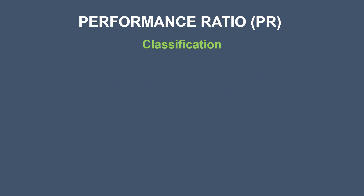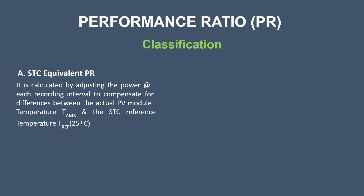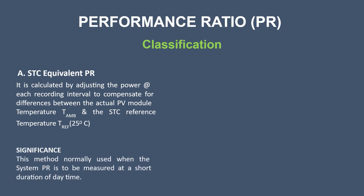Now let's look at the types of PR, each with their own significance and applicability. First is STC equivalent PR. It is determined by adjusting the power at each recording interval to compensate for the difference between the actual PV module temperature and the STC reference temperature. This method is normally used when the system performance ratio is to be measured over a short duration of daytime.